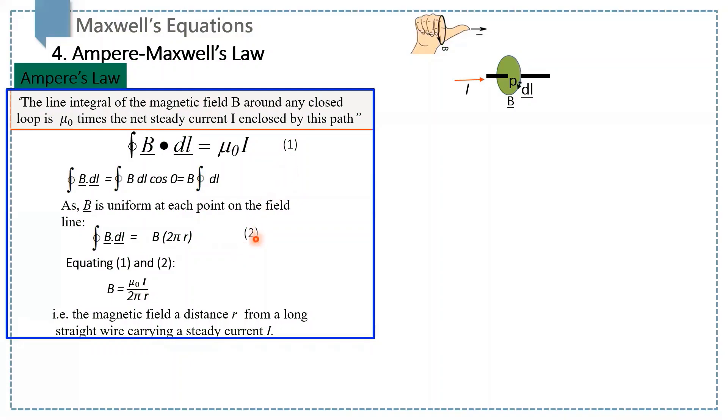Equating equation 1 and 2, we get B equal mu0 i over 2 pi r. This is the magnetic field at some distance r from a long straight wire carrying a steady current i.